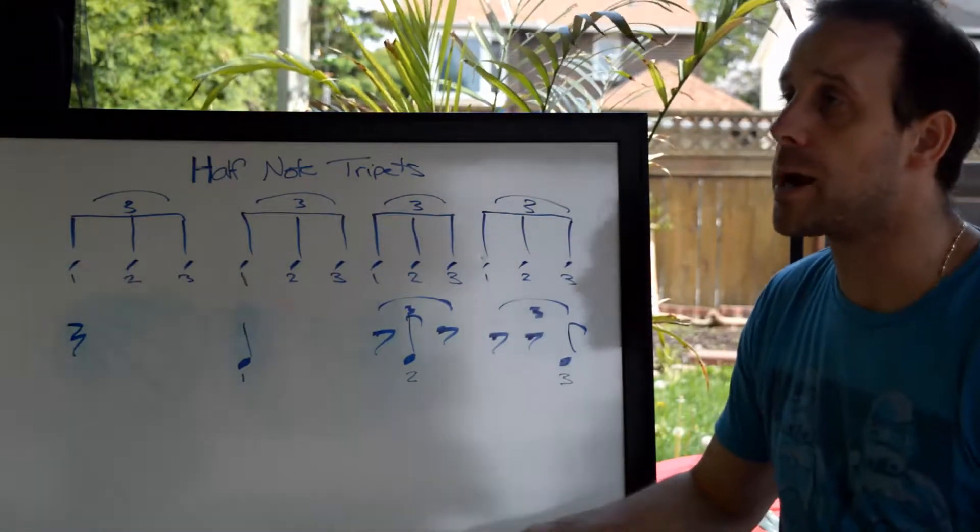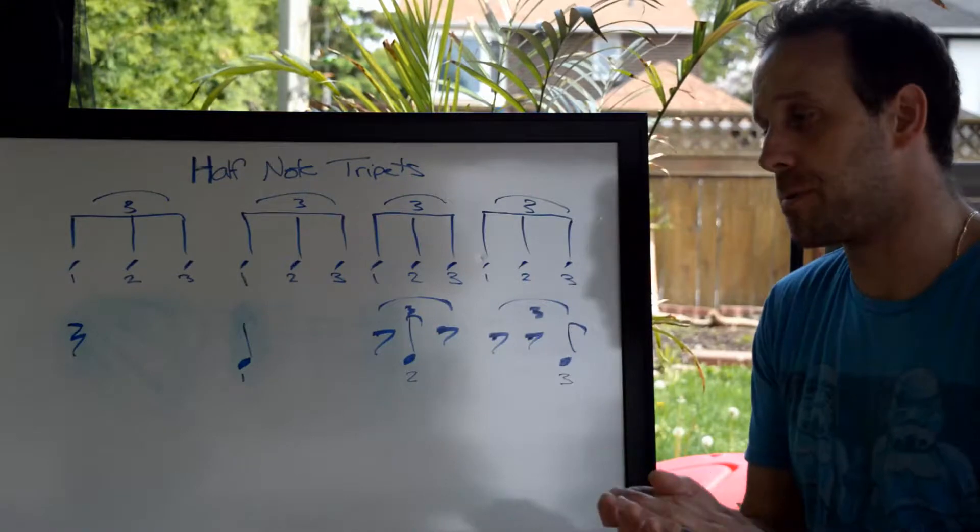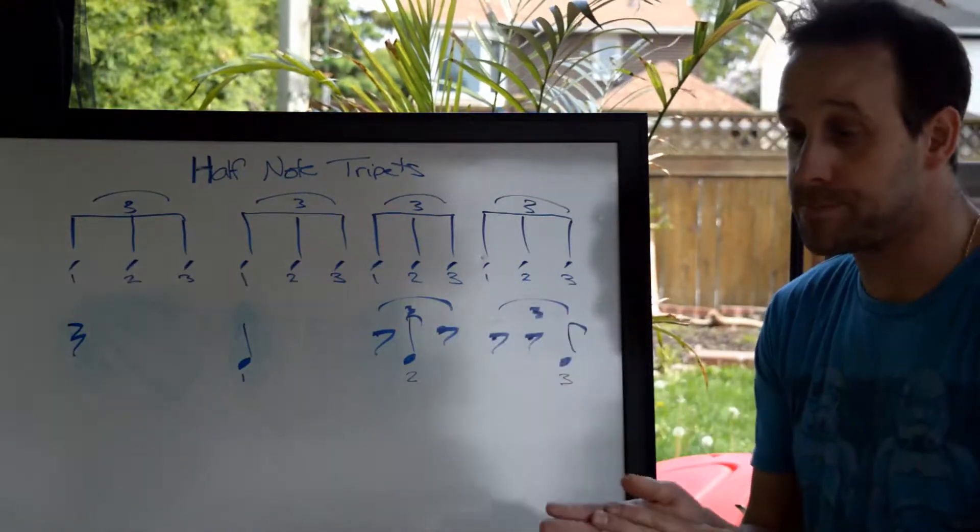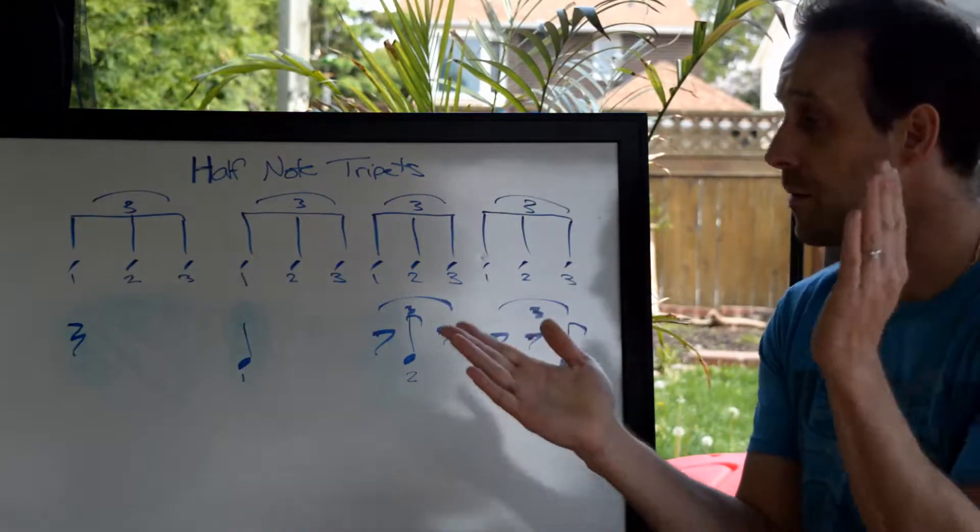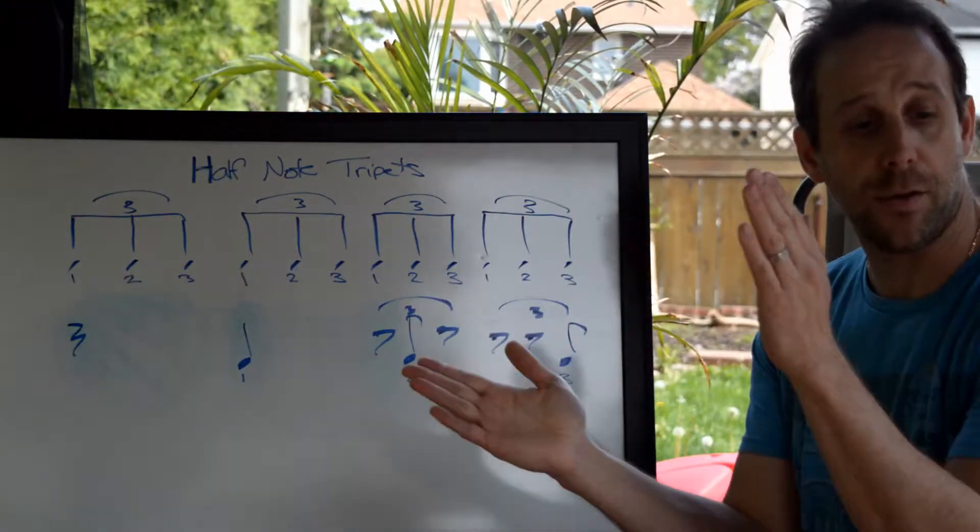So when I'm thinking about it, I'm going one triplet, two triplet, three triplet, four triplet, first, second, third, first, second, third.